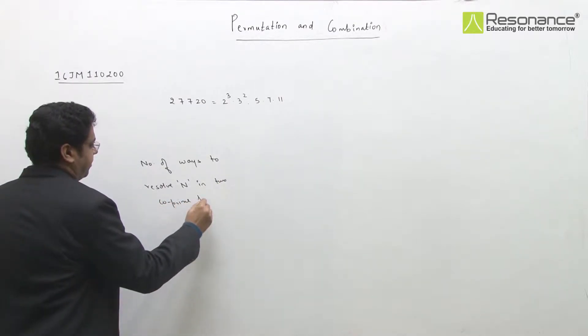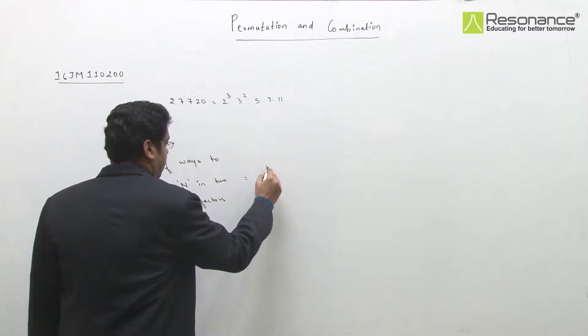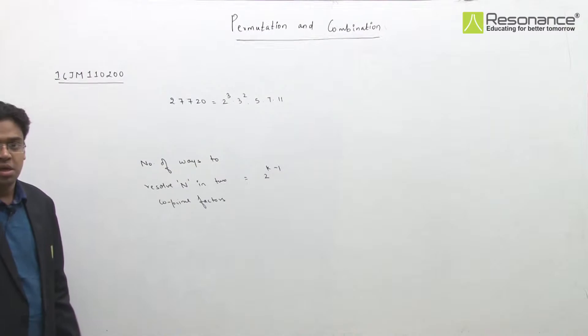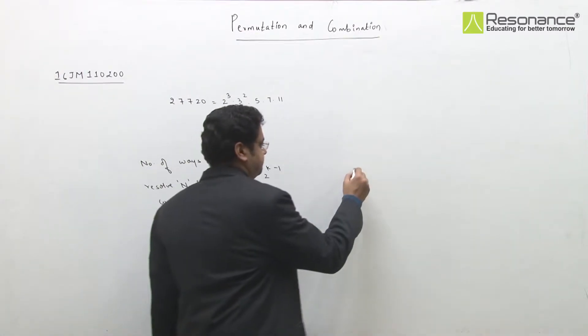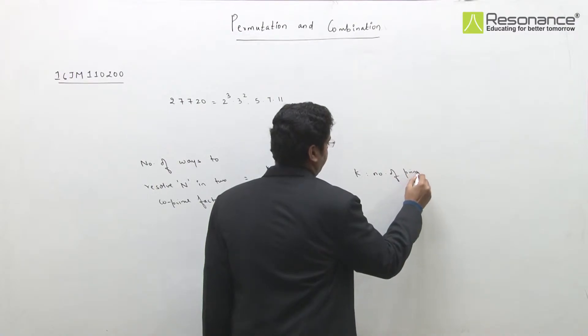Co-prime means which is 1, is equals to 2 raise to the power k minus 1, where k is the number of prime numbers involved.